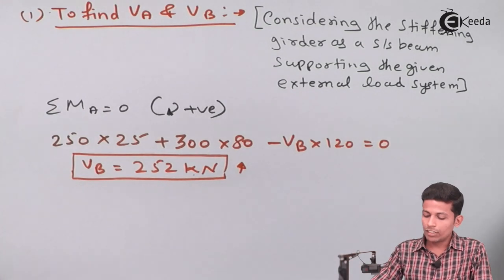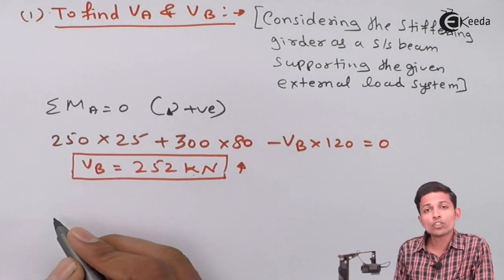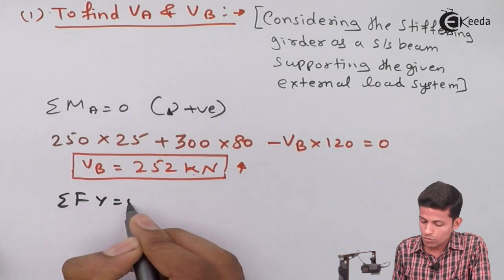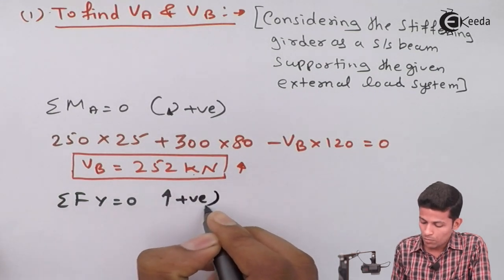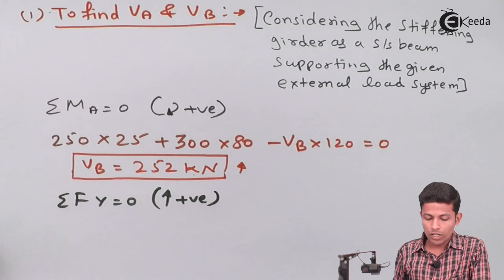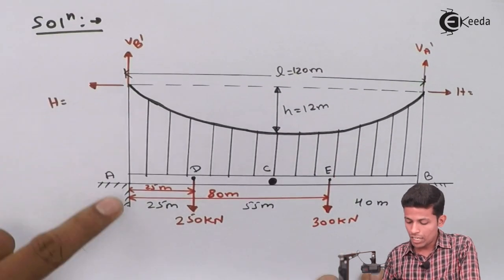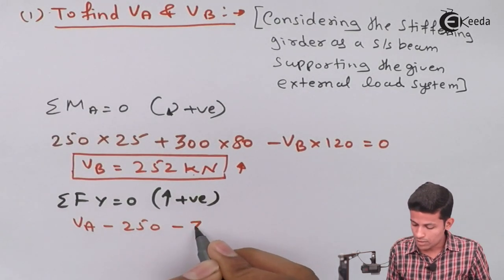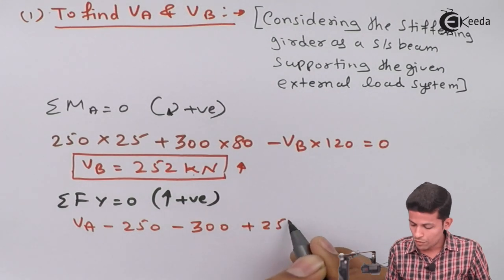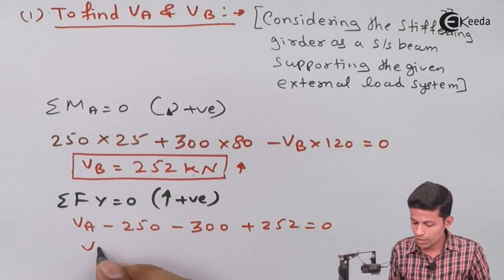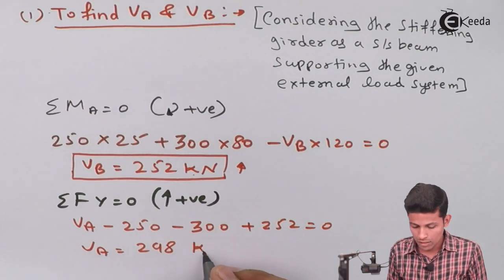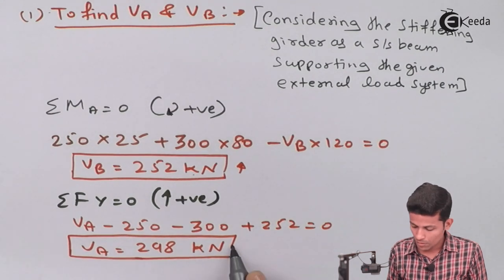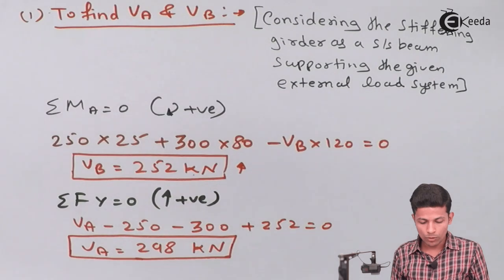After finding VB, we apply summation of Fy = 0 with upward positive. So VA + VB − 250 − 300 = 0, giving VA + 252 − 250 − 300 = 0. Therefore VA = 298 kN upward.